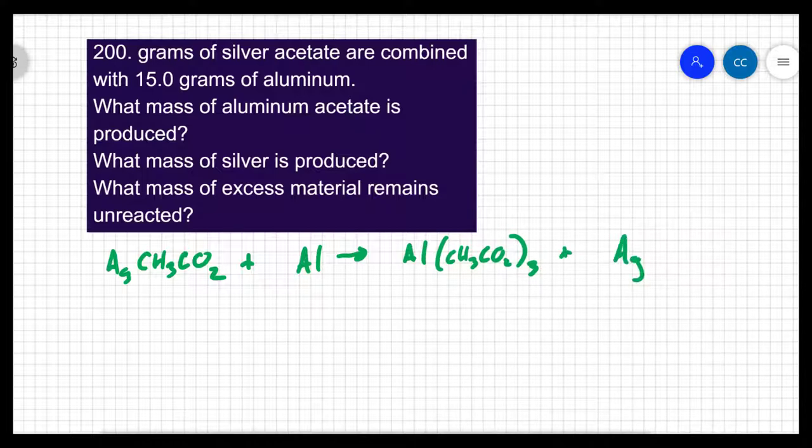So if I have three acetates as a product, I will need three acetates as a reactant, which then is going to give me three silvers as a product. And I now have a balanced equation. You always have to start with a balanced equation.